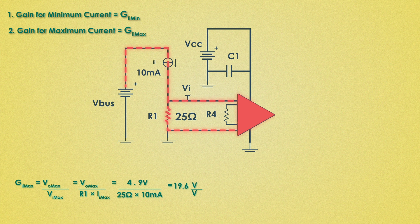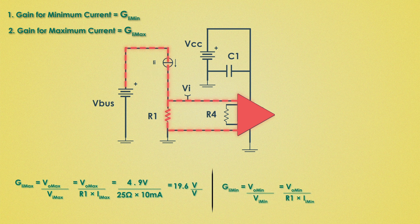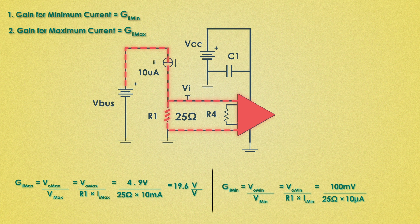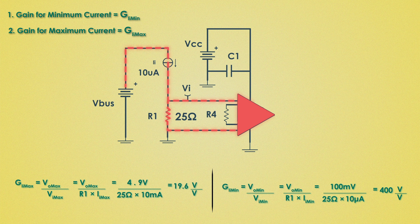Now gain for minimum current we can just alter the formula like this. Vo_minimum is the minimum output voltage 100 milli volts and minimum current through the load will be 10 micro amperes. So this value comes as 400. The circuit needs a gain switching network to toggle between these two gains.